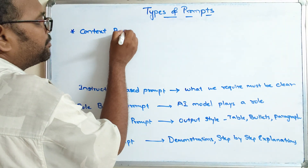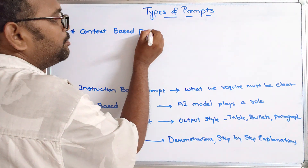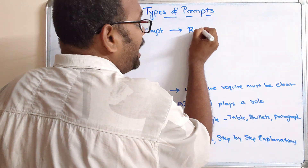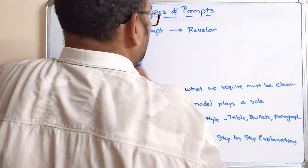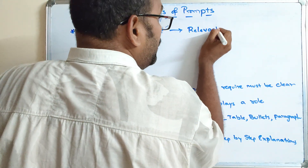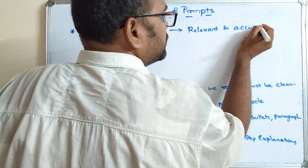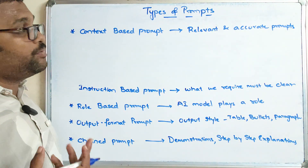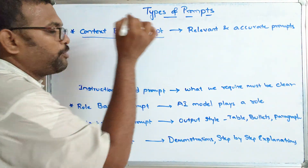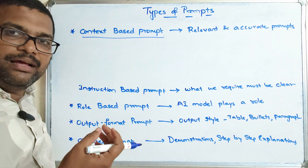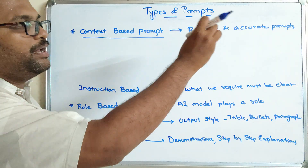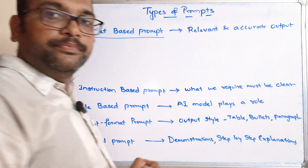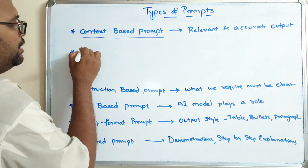Next is the context-based prompt. Here we provide context in order to get relevant and accurate output. We give some context and within that context we can get relevant and accurate output.